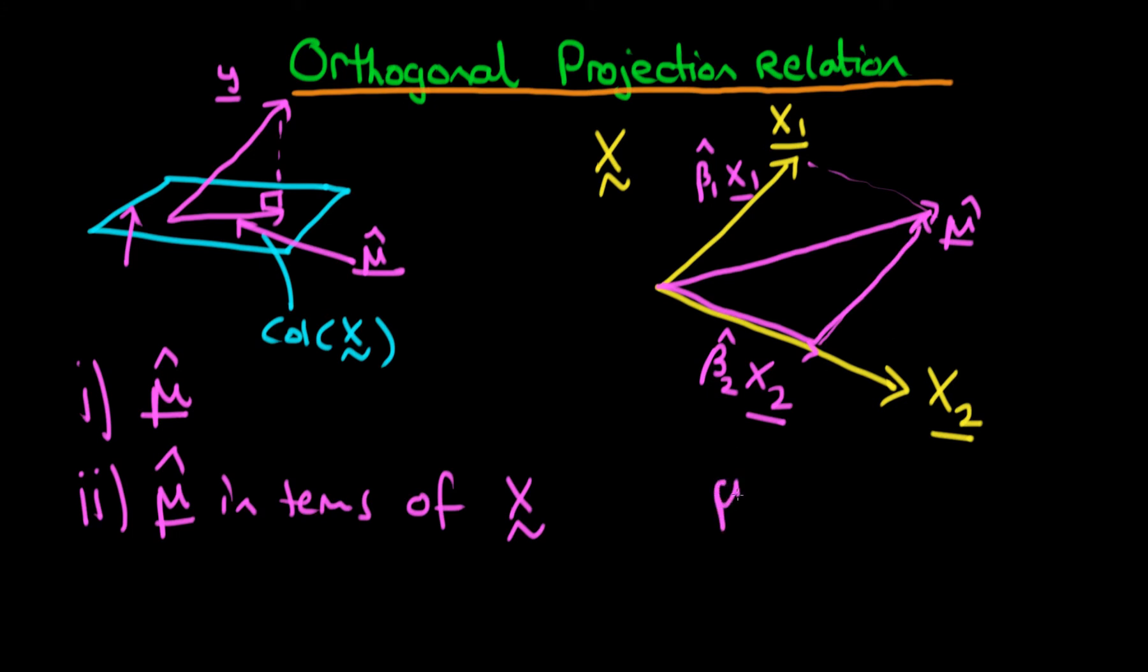Hence, we can think about mu hat as being equal to beta 1 hat times X1 plus beta 2 hat times X2, where X1 and X2 in this example are the column vectors of those two particular independent variables.